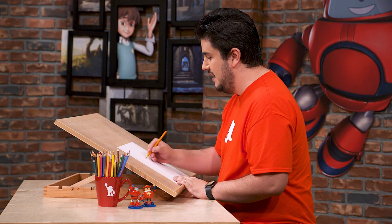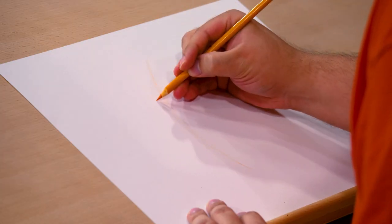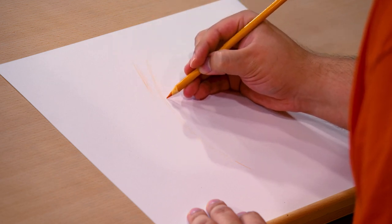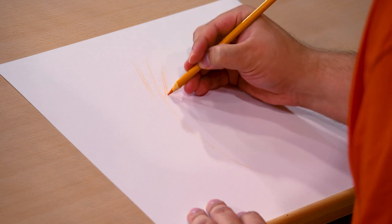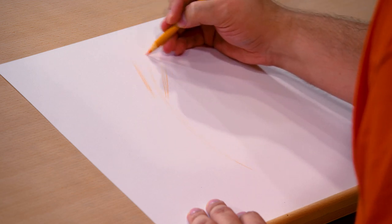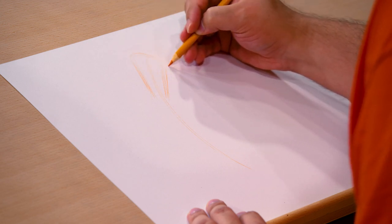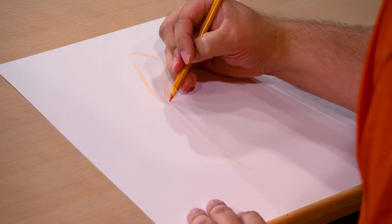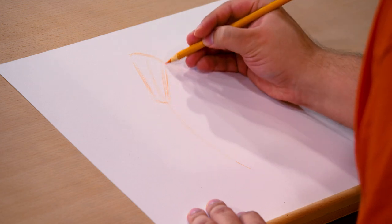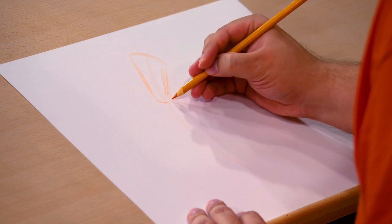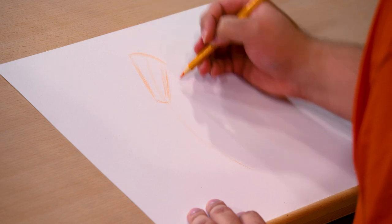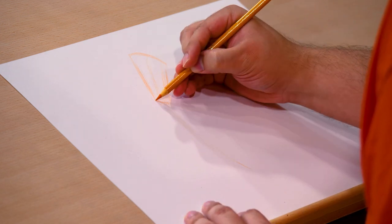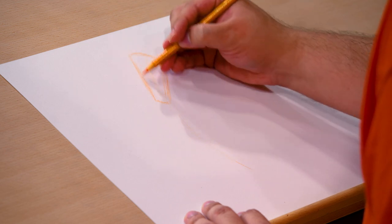Then of course I like to start with the head. Gears has a kind of triangular head. It's actually a cylinder, but it comes in at the bottom and gets bigger at the top. We do a curved line at the top and a curved line at the bottom, and that's gonna be the basis for his head. We're drawing really light because we've got a lot of detail to add, and I'm just trying to make sure that we've got proper shape and proportion.